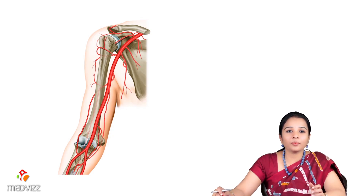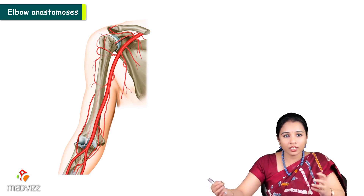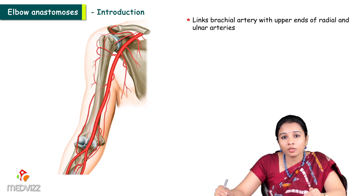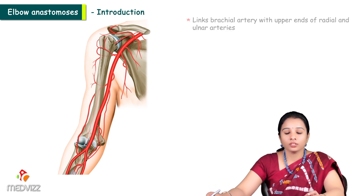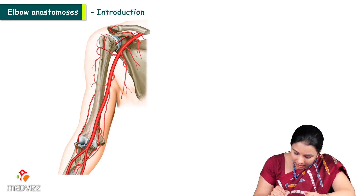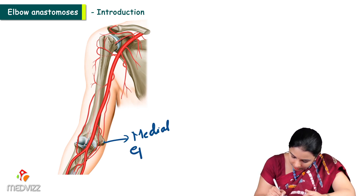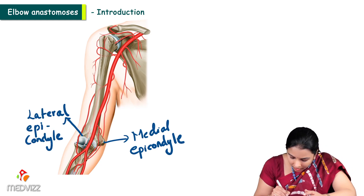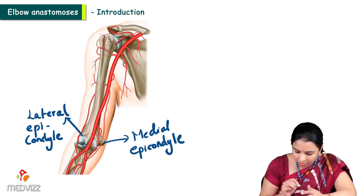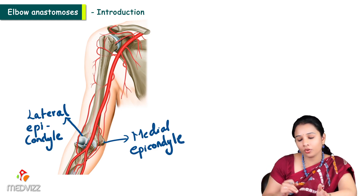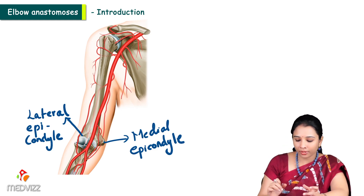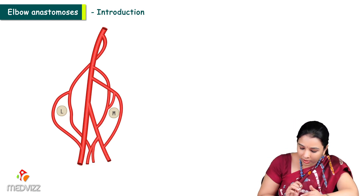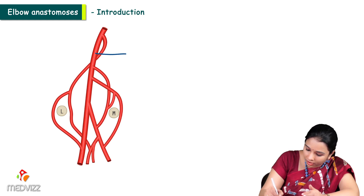We will learn about elbow anastomosis — the connection between the brachial artery and the upper ends of the radial and ulnar arteries, known as anastomosis around the elbow joint. We can differentiate it using the medial and lateral epicondyles: in front of the medial epicondyle, posterior to the medial epicondyle, in front of the lateral epicondyle, and posterior to the lateral epicondyle. Here is a schematic diagram showing the link, where M is for the medial side and L is for the lateral side.